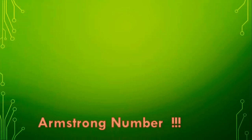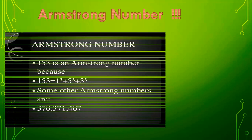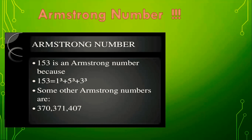Now, we are going to see a number called Armstrong number. What is an Armstrong number? An Armstrong number is a number which is expressed as the sum of the cubes of its digits. Here, I have considered the number 153. 153 is expressed as 1 cubed plus 5 cubed plus 3 cubed. 1 cubed is 1, 5 cubed is 125, 3 cubed is 27. When you add these, you get 153. So, 153 is one of the Armstrong numbers.